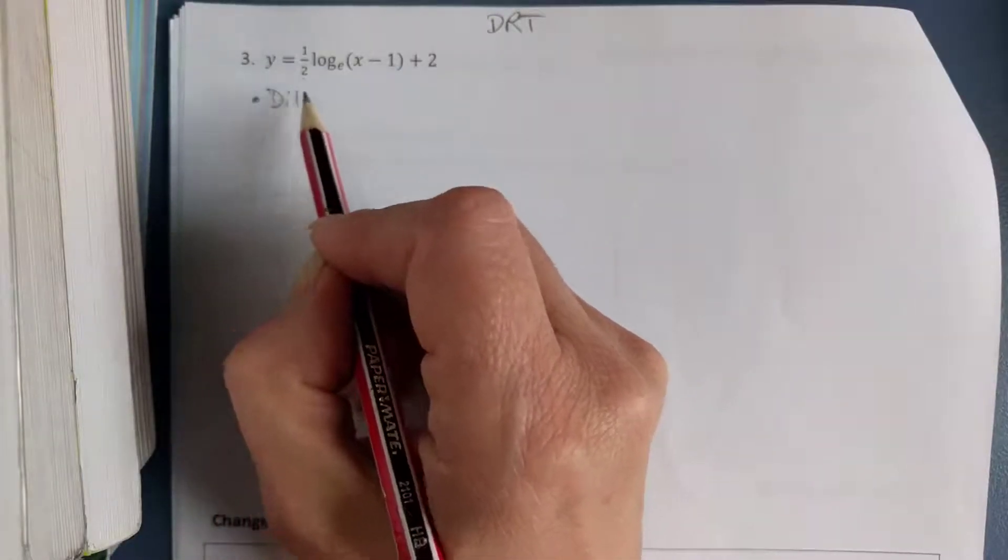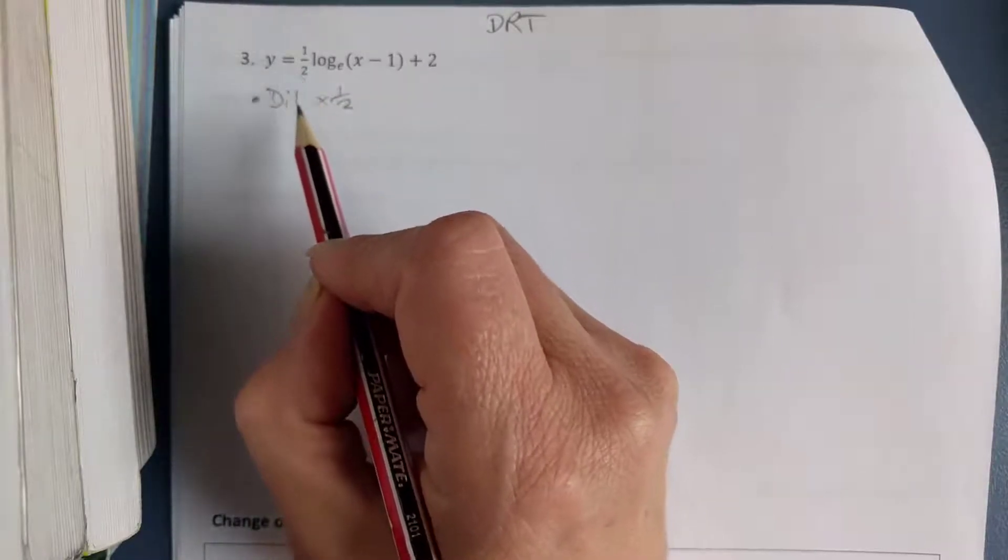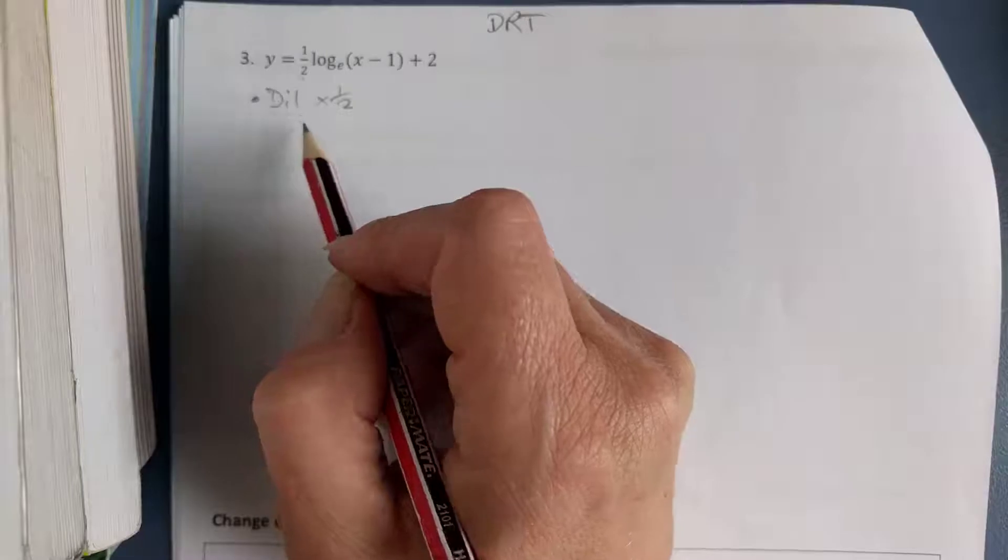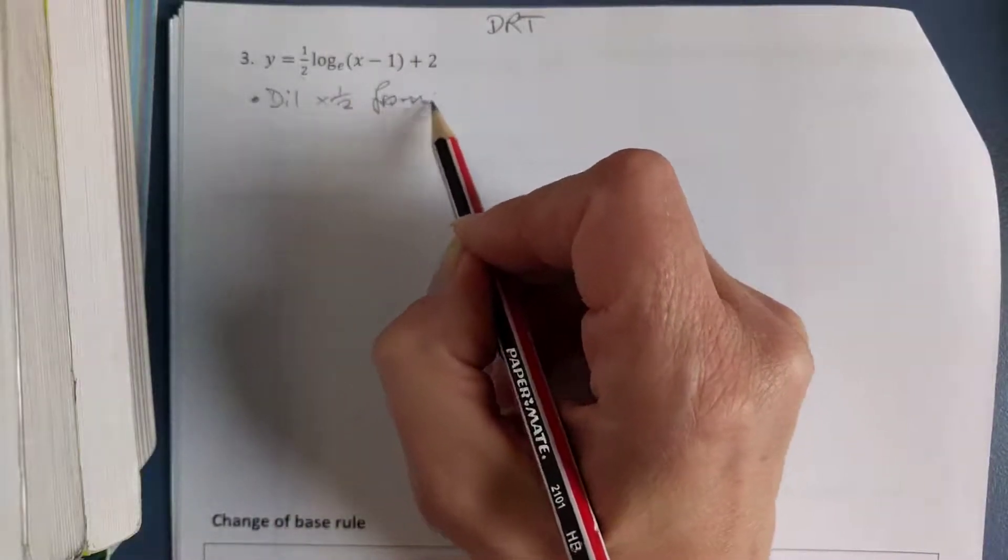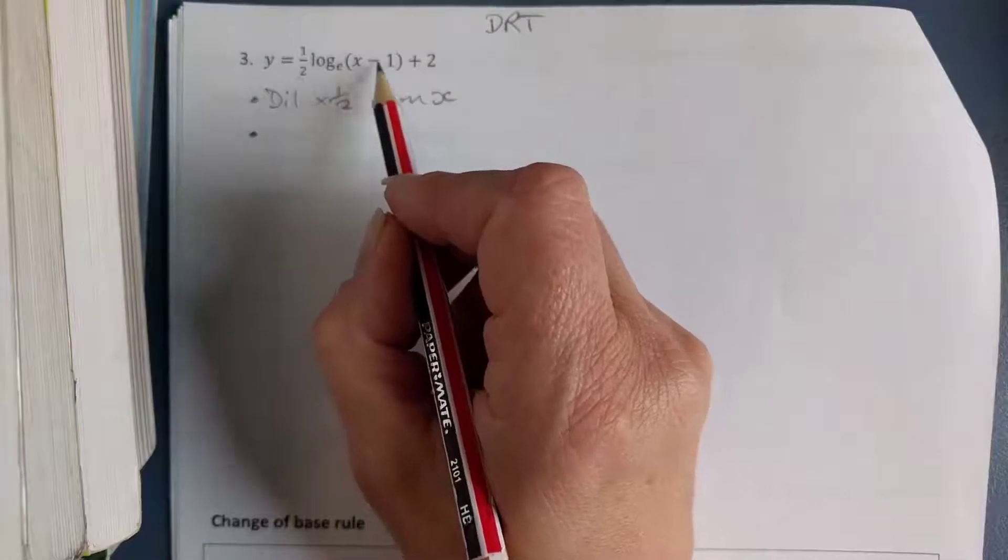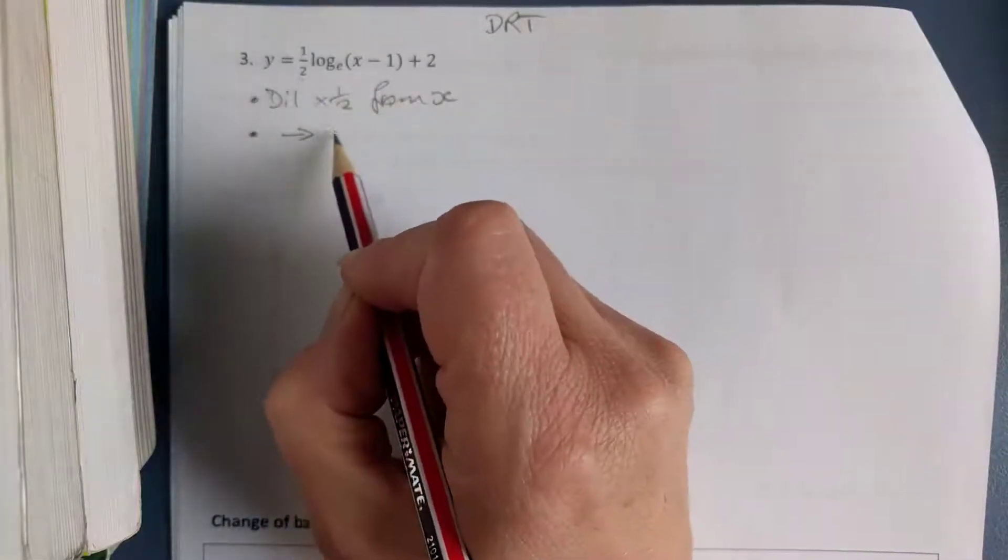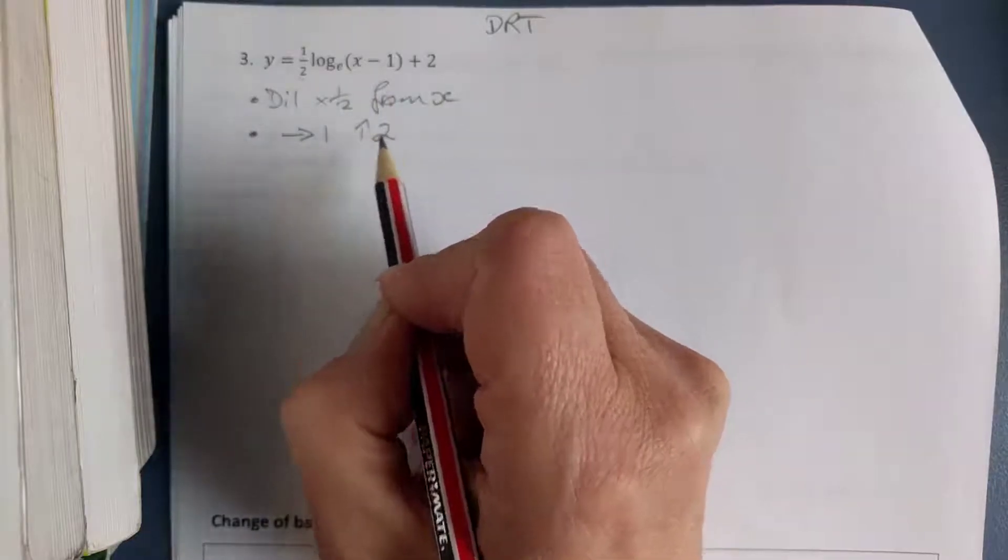So I've got a dilation by a factor of one half, and this is out the front of the log, so that means it's acting on y, so it's from the x-axis. Then I've got my translations: x minus 1 means I'm going to go to the right one, and the plus 2 at the end means I'm going to go up 2.